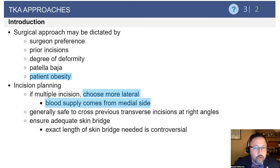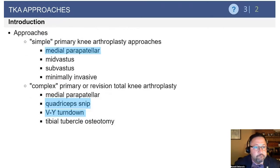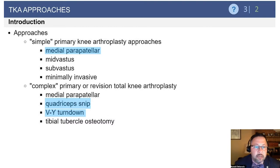When crossing transverse incisions, you'd like to make them at 90 degrees, and at minimum you want a 60-degree angle so that the apex of that incision does not die. We're going to discuss various approaches: the medial parapatellar, the mid-vastus, and the sub-vastus.